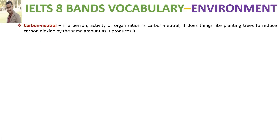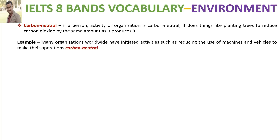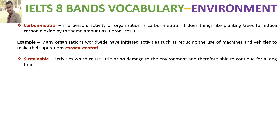The next word is 'carbon neutral'. It means to negate or reduce the amount of carbon dioxide produced by a person or an organization through activities which absorb or reduce carbon dioxide from the atmosphere, like planting trees. The example says that organizations worldwide have initiated activities such as reducing the use of machines and vehicles to make their operations carbon neutral.